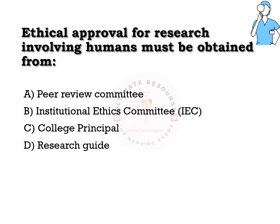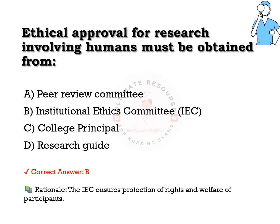Ethical approval for research involving humans must be obtained from: options are a) peer review committee, b) institutional ethics committee, c) college principal, d) research guide. The answer is b) institutional ethics committee. The IEC ensures protection of rights and welfare.